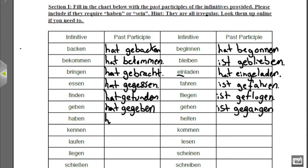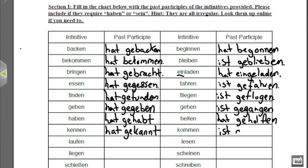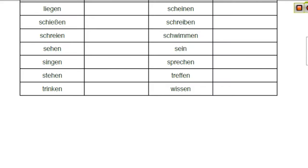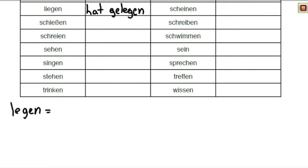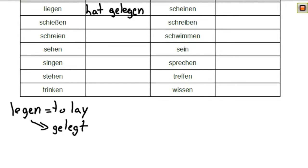Haben: hat gehabt. Helfen: hat geholfen. Kennen: hat gekannt. Kommen: ist gekommen. Laufen: ist gelaufen. Lesen: hat gelesen. Liegen: hat gelegen. Liegen is going to bother you because there is also a verb legen, which means 'to lay' and is regular, changing to gelegt. The only difference between liegen and legen in the past tense is gelegen versus gelegt.